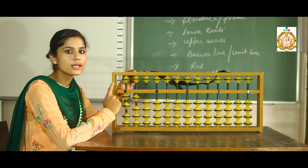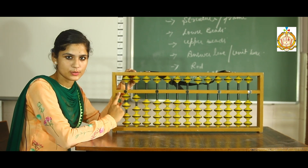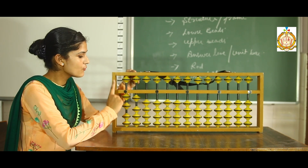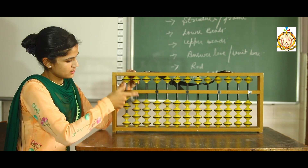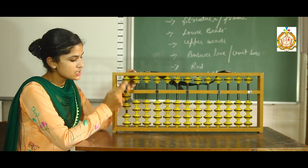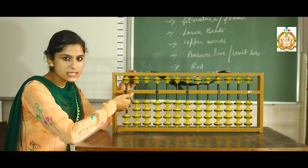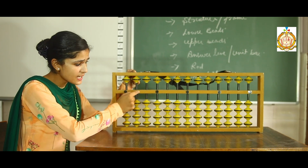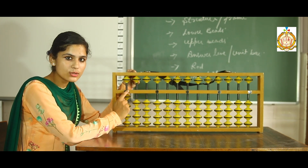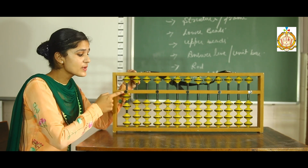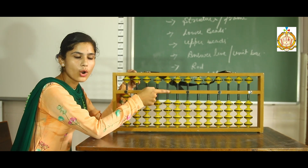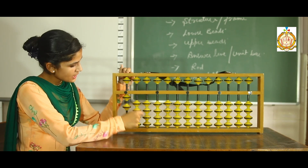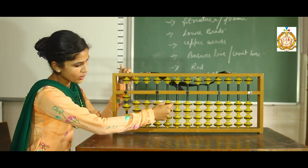The fourth part is the answer line or unit bar. This central line you are seeing here is called the answer line or unit bar. When beads touch this central line, the value is considered added in the Abacus. That is why this central line is called the answer line or unit bar.